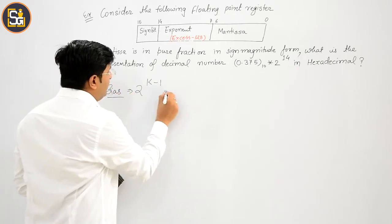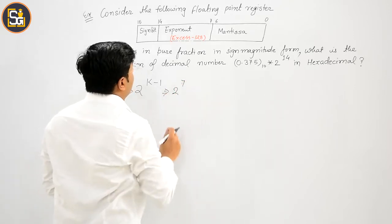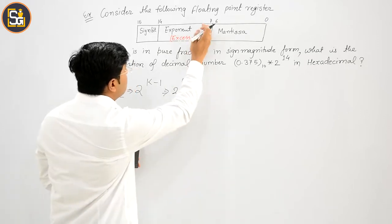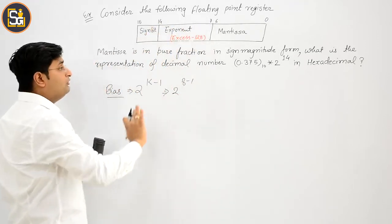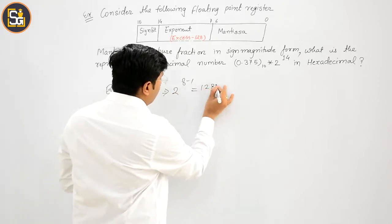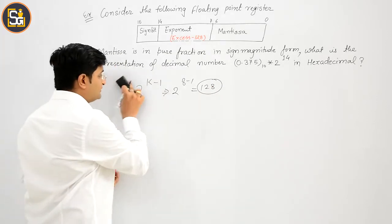है ना? और 2 की पावर k कितना है आपका? 7, sorry, 8. 8-1, 7 से 14, दोनों number को include करते हुए है. That is nothing but 128. Clear? That is my bias.